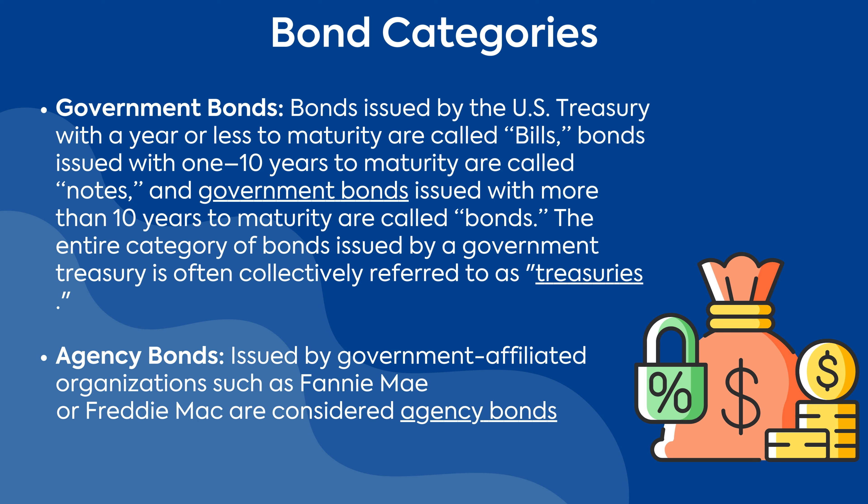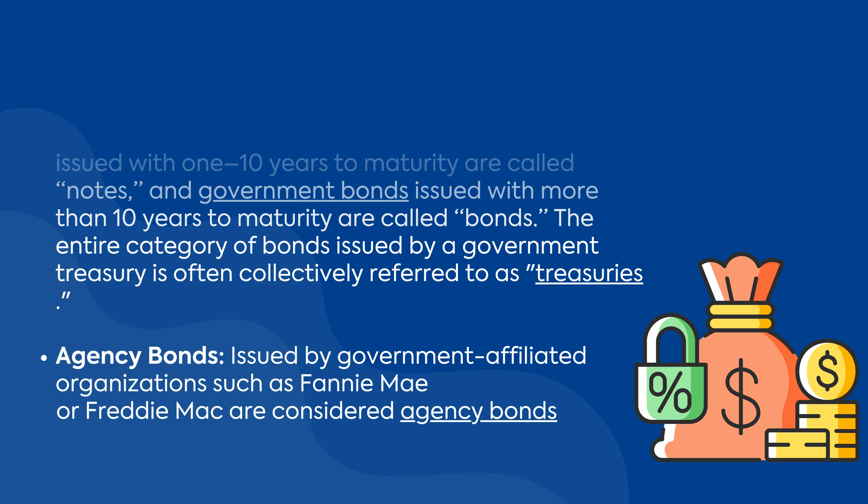The entire category of bonds issued by a government treasury is often collectively referred to as treasuries. Agency bonds issued by government-affiliated organizations such as Fannie Mae or Freddie Mac are considered agency bonds.